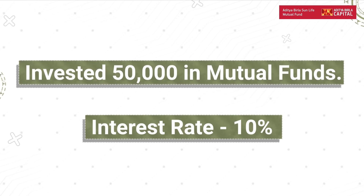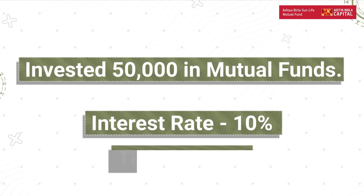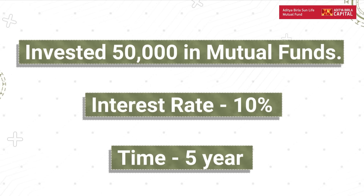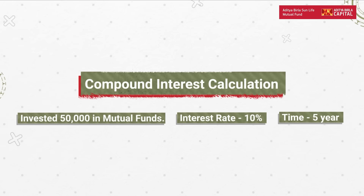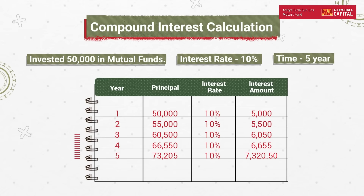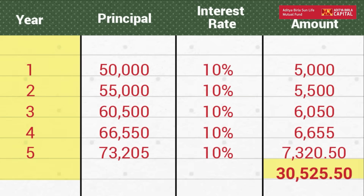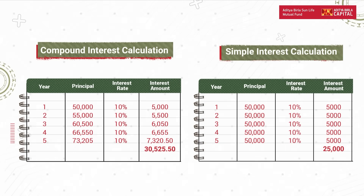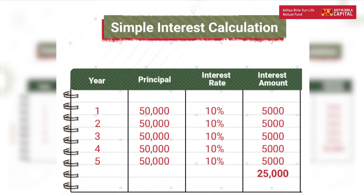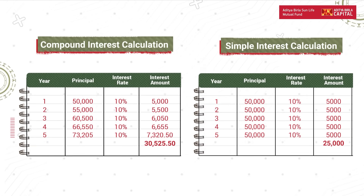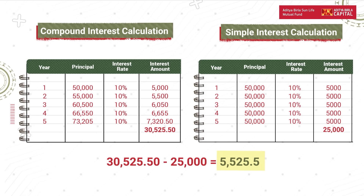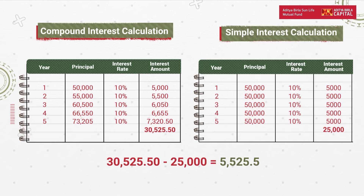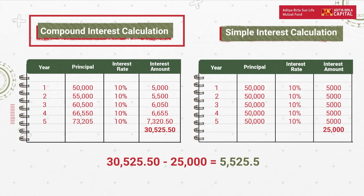Ankit is going to invest for the same five years. Let us do all the calculations for compound interest and take a look at the sum. The total interest earned by Ankit in these five years is ₹30,525. Compare this to simple interest where Ankit earned ₹25,000 — there is a difference of over ₹5,000. This is exactly why people swear by compound interest and the power of compounding in the stock markets.